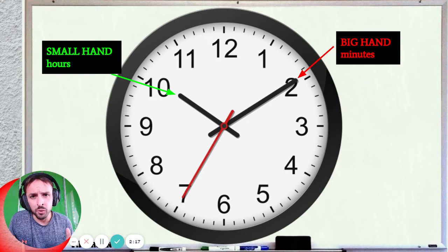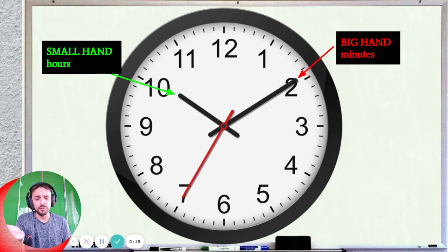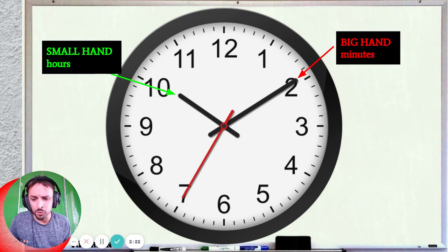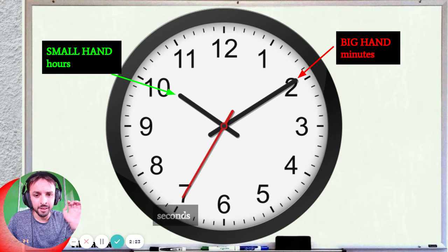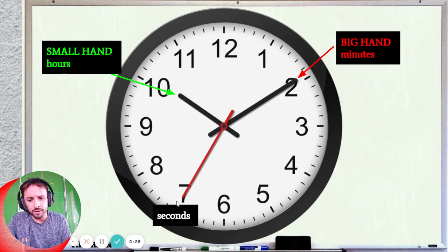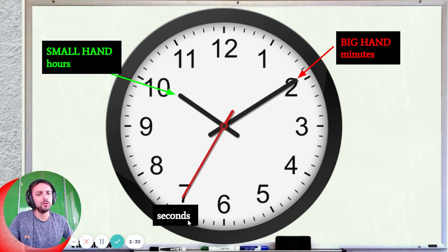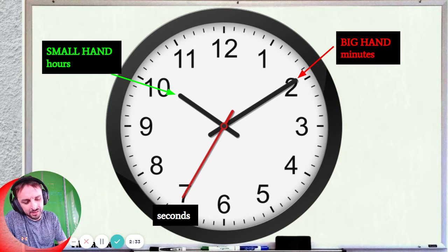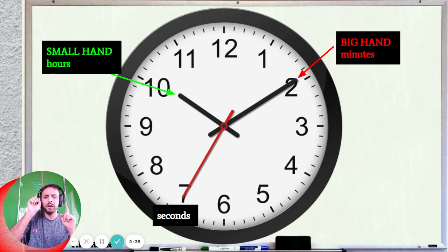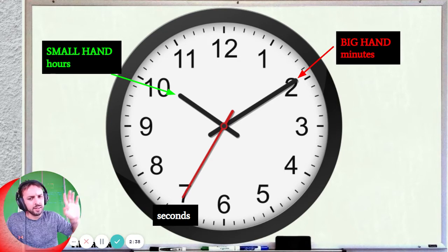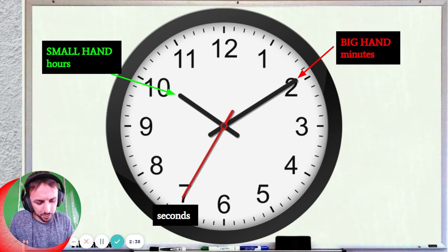Because what we want to know — we need to know the hours and we need to know the minutes. That's what we need to know to tell the time. And on this clock we have another hand, a third hand — that is the seconds hand. You don't need to know the seconds hand. Don't worry about the seconds. Just remember the hours and the minutes.